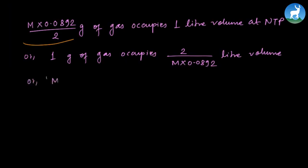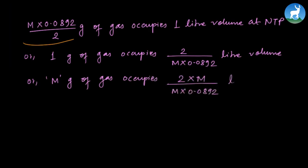So M × 0.0892 / 2 grams of gas occupies 1 liter volume at NTP. Suppose we say M grams of gas — how much volume does it occupy? It occupies 2 / (M × 0.0892) liters, which simplifies to 22.4 liters at NTP. This confirms that the molar volume of any gas at NTP is 22.4 liters.